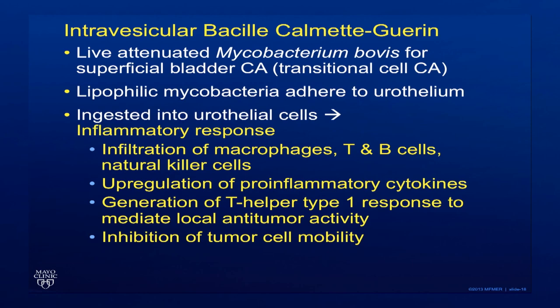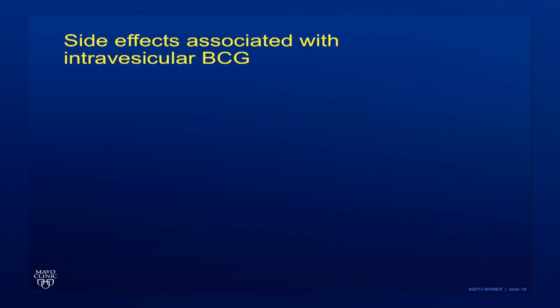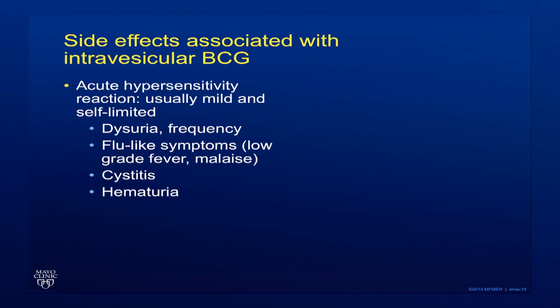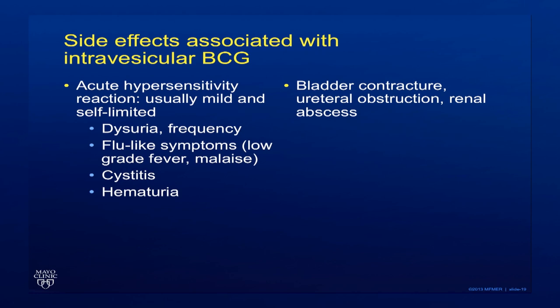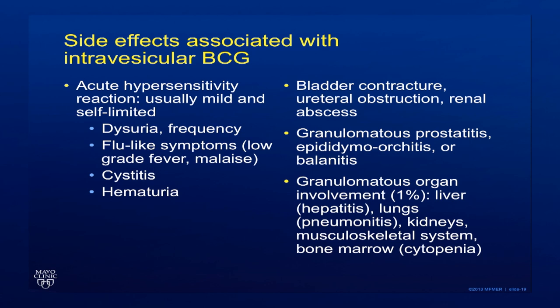In addition, the tumor cell mobility is inhibited. This organism is infused into the bladder weekly for 6 to 12 weeks, and then the therapy may continue monthly for several months, up to 9 months. Side effects associated with intravesicular BCG range from an acute hypersensitivity reaction — usually mild and self-limited — to longer-term complications like bladder contracture and other obstructions. There can also be granulomatous involvement of the prostate and other structures, or granulomatous involvement of organs in a minority, including the liver, lungs, kidney, musculoskeletal system, and the bone marrow.